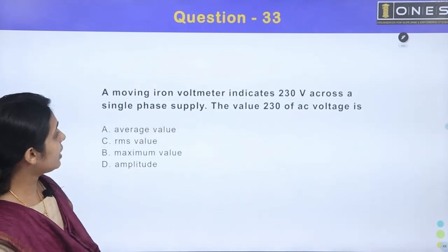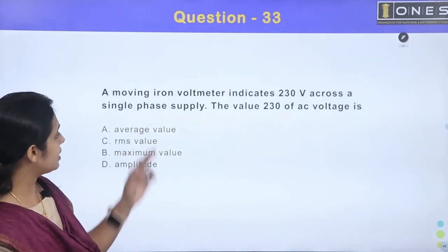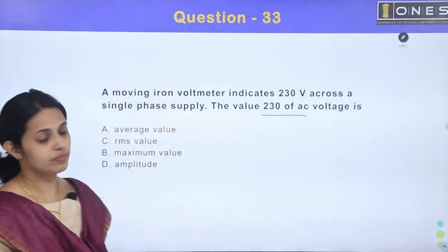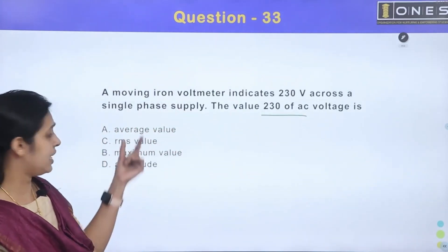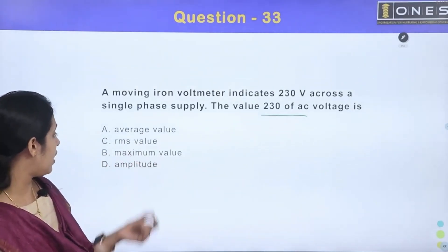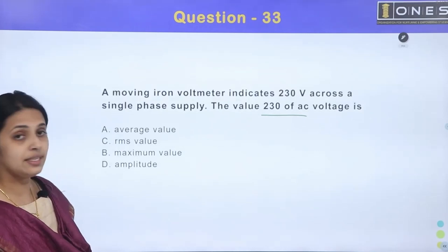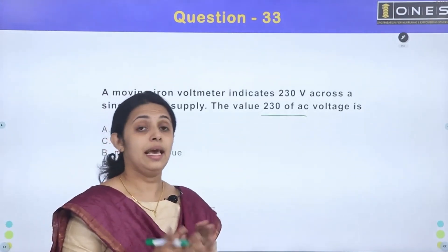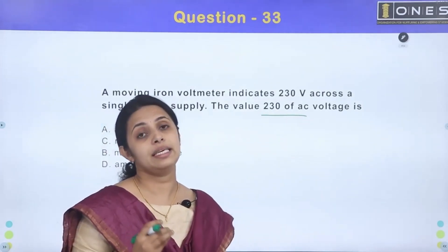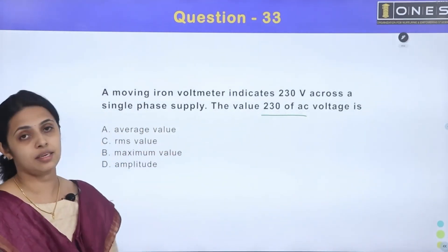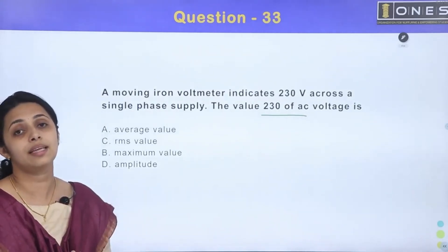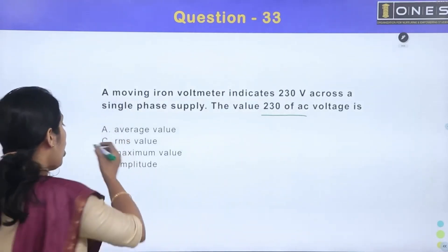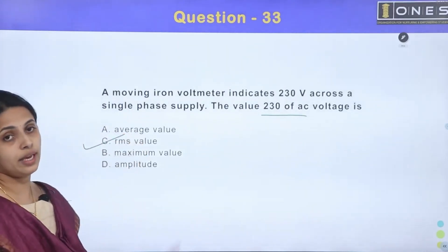Next. A moving iron voltmeter indicates 230 volts across a single phase supply. The value 230 of AC voltage is: Option A Average value, Option B Maximum value, Option C RMS value, and Option D is Amplitude. What we call a waveform we use with MI instrument is in terms of the RMS value.